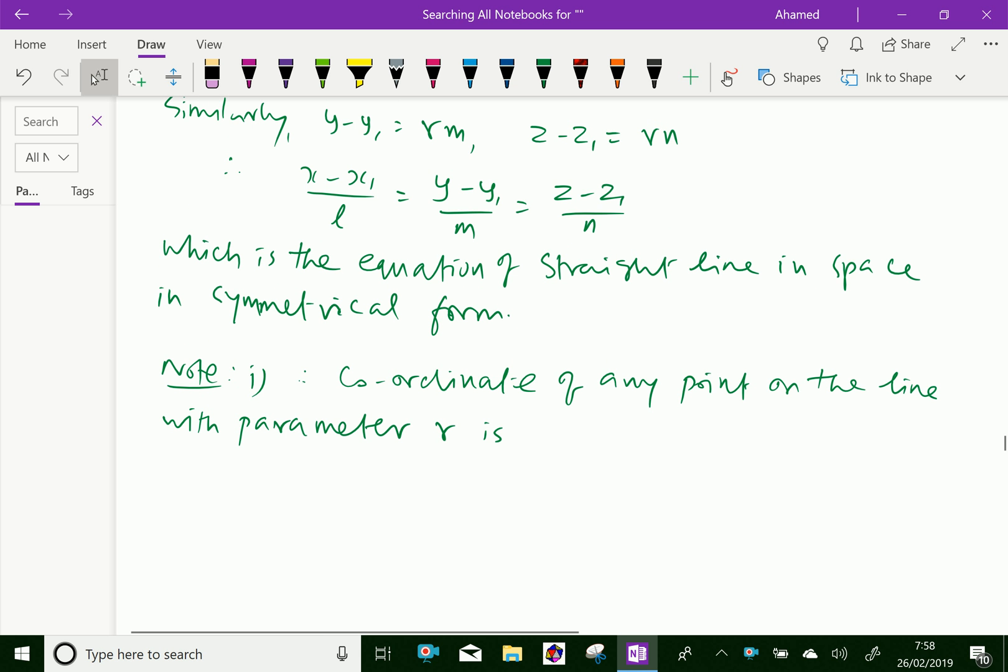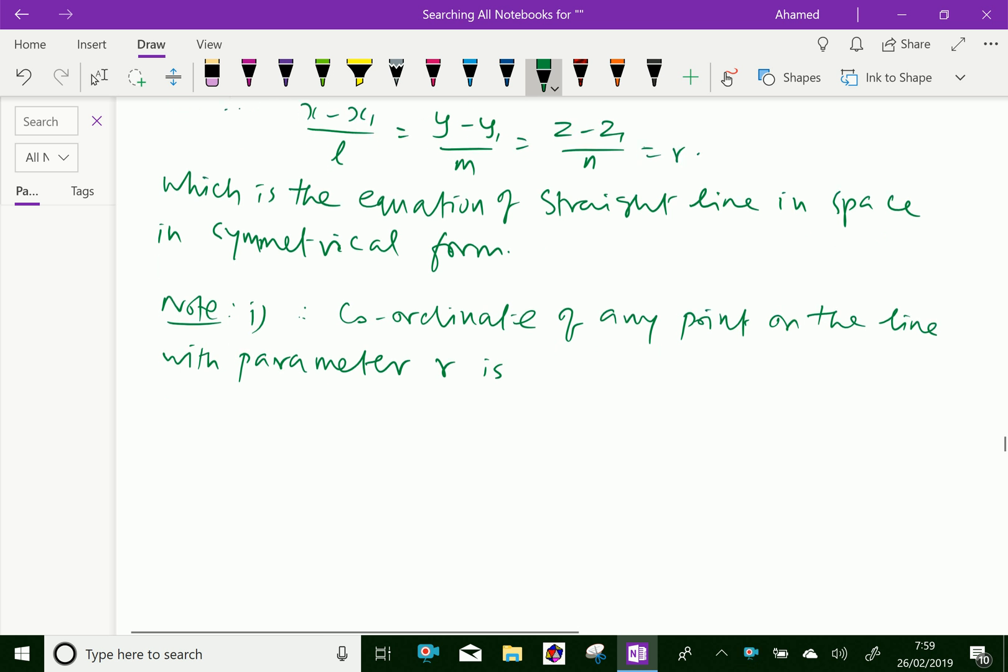From the equation X minus X1 over L equals Y minus Y1 over M equals Z minus Z1 equals R, we can get the value of X as X1 plus LR, comma, for Y value Y1 plus MR, Z value Z1 plus NR. These are coordinates of any point on that line.